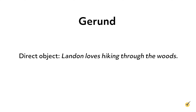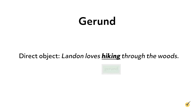If a gerund were to be the direct object of a sentence, it would look like this. We can see that the word hiking is an action, but in this case the act of hiking is a gerund acting as the direct object of the sentence because it answers the question: what does Landon love?